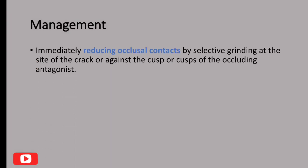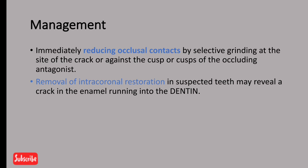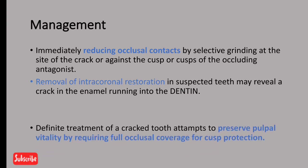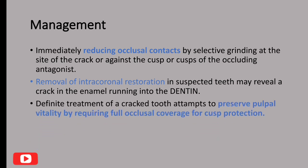For management, first immediately reduce occlusal contacts by selective grinding at the site of the crack or against the opposing occluding cusp. Next, remove any intracoronal restoration in the suspected tooth, as this may reveal a crack in the enamel running into the dentine. The definitive treatment is to preserve pulpal vitality by requiring full occlusal coverage for cusp protection.